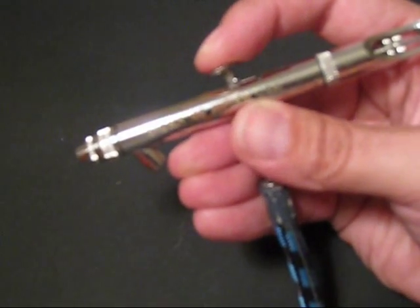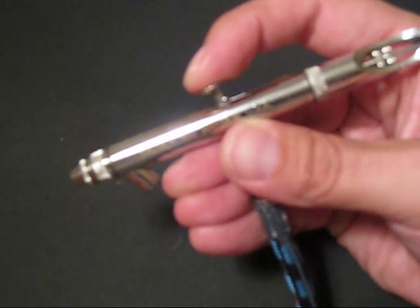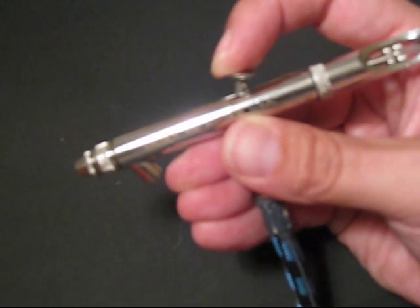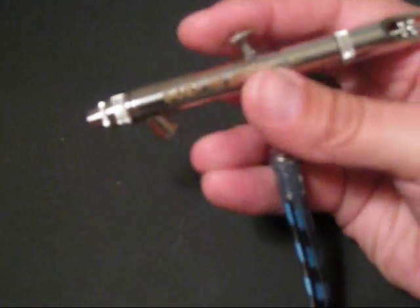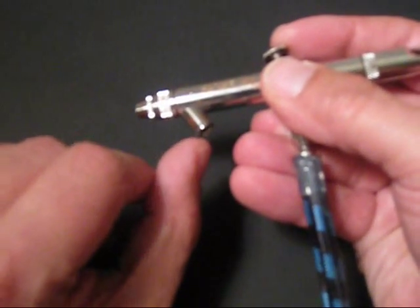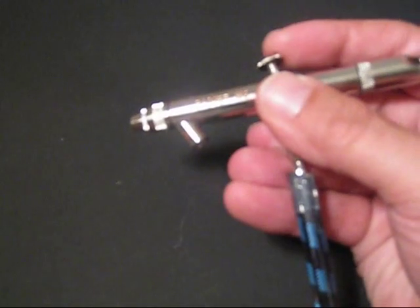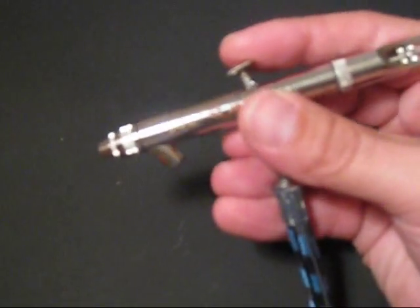So the first action, pressing in, releases the air. The second would be to pull back on the trigger. That releases paint from this attachment here, where the paint cup or paint jar is attached.